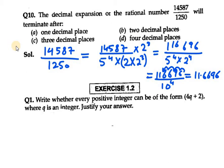Now what we need to tell them is, we'll terminate after how many decimal places. So it is by 4 decimal places. So the answer is D part in this case.